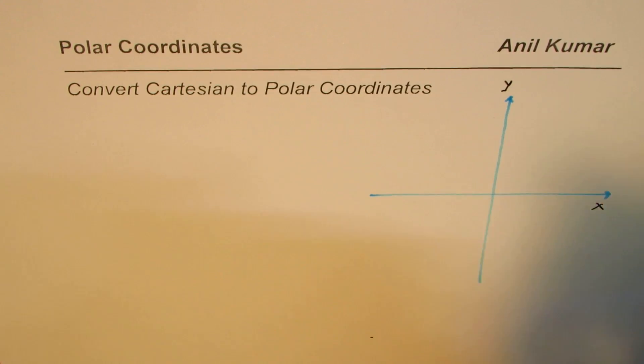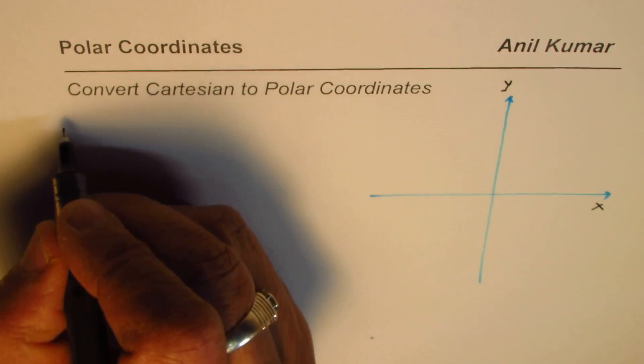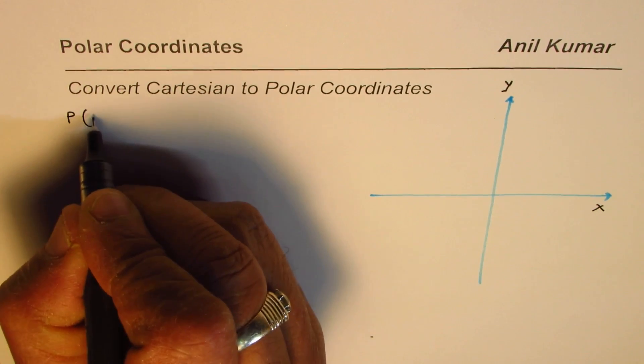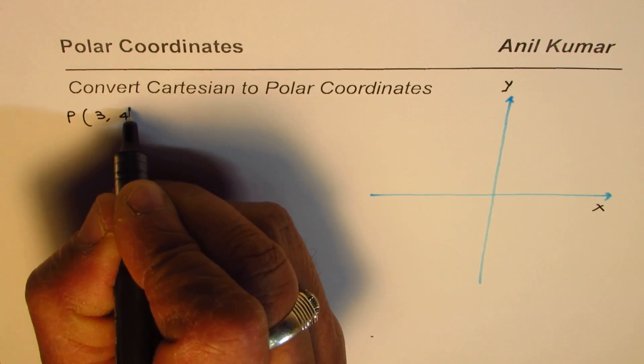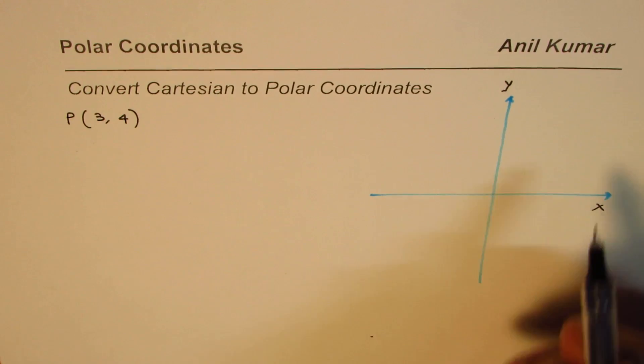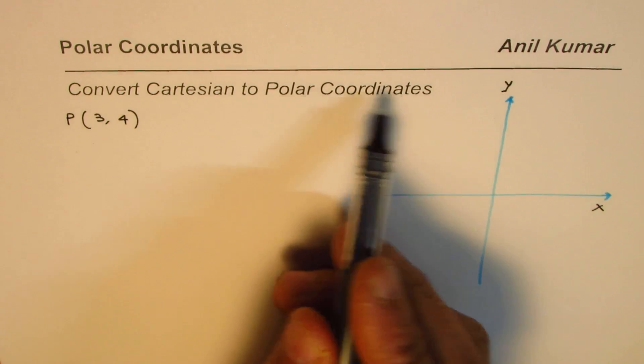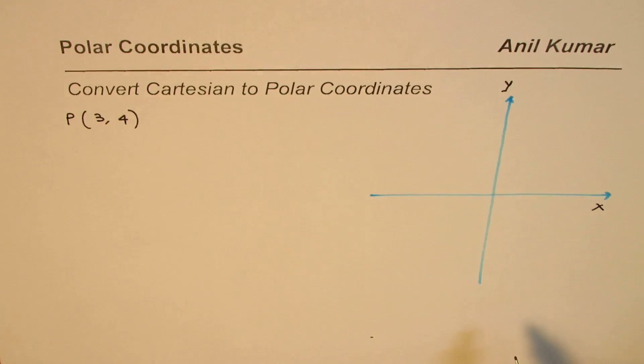This is the x axis, that's the y axis. Now as an example let me take a point. Let's say the point P given to us is 3, 4. So if that is the point in a Cartesian plane we'll see how to convert this to the polar coordinate system.